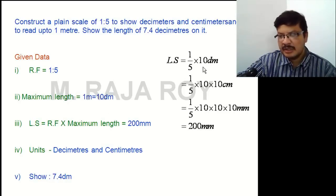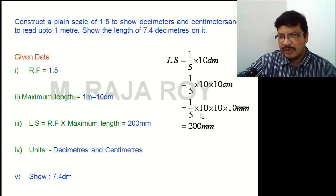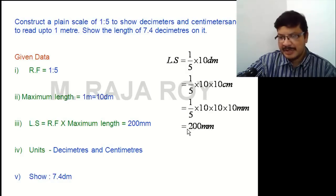So that means 1 by 5 into 10 decimeters, that is equal to 1 by 5 into 10 into 1 decimeter equal to 10 centimeters. That is equal to 1 by 5 into 10 into 10 into 1 centimeter equal to 10 millimeters. If you simplify this, you will get length of the scale equal to 200 millimeters.